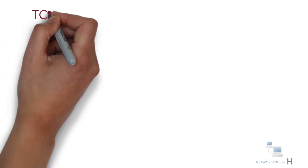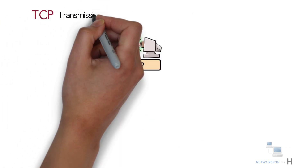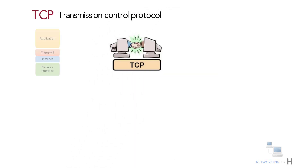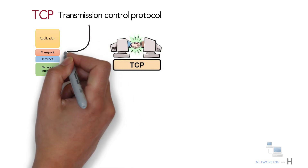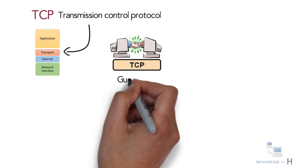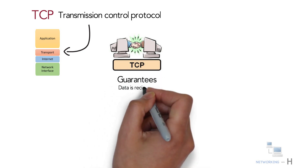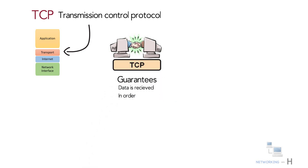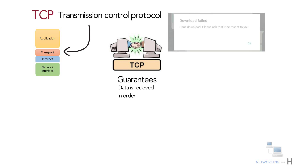TCP stands for Transmission Control Protocol. It is one of the main protocols used in a TCP/IP network and it belongs to the transport layer of the TCP/IP suite. TCP guarantees that all the data is received and in order, because without TCP some of the data sent by the sender could be missing or out of order. For example, if you download a file, you might not get the entire file, or you could get the file out of order, which could render it useless.